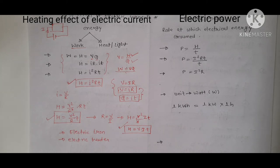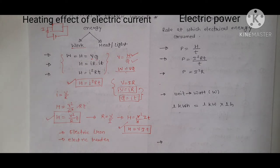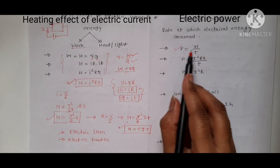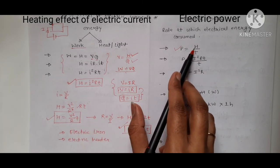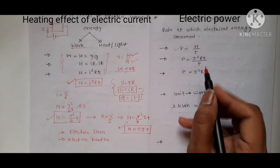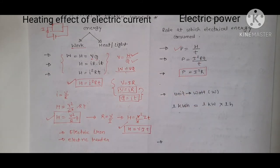Now let's move on to electric power. In general, power is defined as work done per unit time: P = W/T. For electricity, the definition is: the rate at which electric energy is consumed or produced is called electric power. The formula is P = H/T. Substituting H = I²RT, we get P = I²R. This is the formula for electric power.